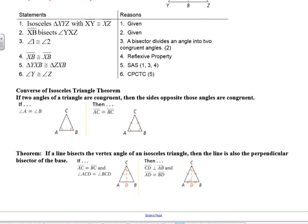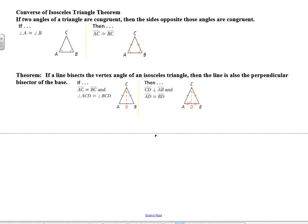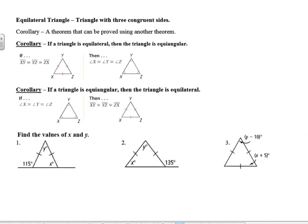The converse of the Isosceles Triangle Theorem — converse just means switch it around — states: if two angles of a triangle are congruent, then the sides opposite those angles are congruent. As a bonus extension: if a line bisects the vertex angle of an isosceles triangle, then the line is also the perpendicular bisector of the base. You need both conditions — it must be isosceles and the line must bisect the vertex angle — for that conclusion to hold.